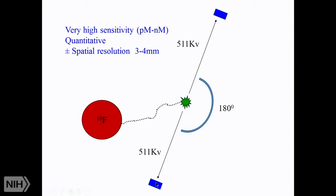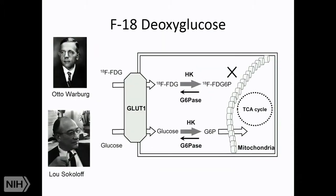With a ring of detectors around the event, you can detect where the event happened — at least the line of response. This detector and that detector will detect an event opposite each other; with that information in 360 degrees, you can compose an image from all these different lines of response. This is better than SPECT because it doesn't require collimation — the event itself is collimated, and you have a lot more a priori knowledge about where it's coming from.